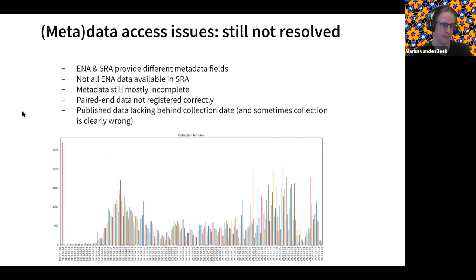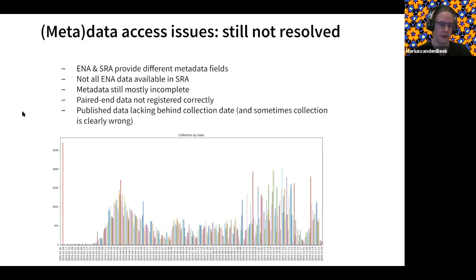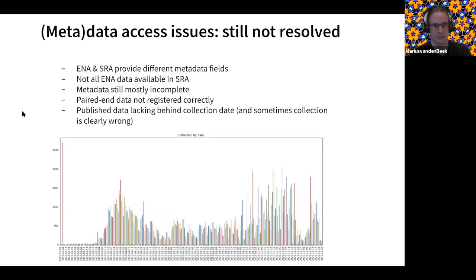One of the issues encountered is that there are both metadata issues and data access issues. These have improved over time as the pandemic progressed and more datasets came in. However, there are still problems when it comes to fully automating an analysis and drawing meaningful conclusions. For ampliconic workflows, you really need to know which primer set has been used and whether your dataset is single-end or paired-end. Also, ENA and the SRA do not have exactly the same datasets — they are currently not entirely in sync.